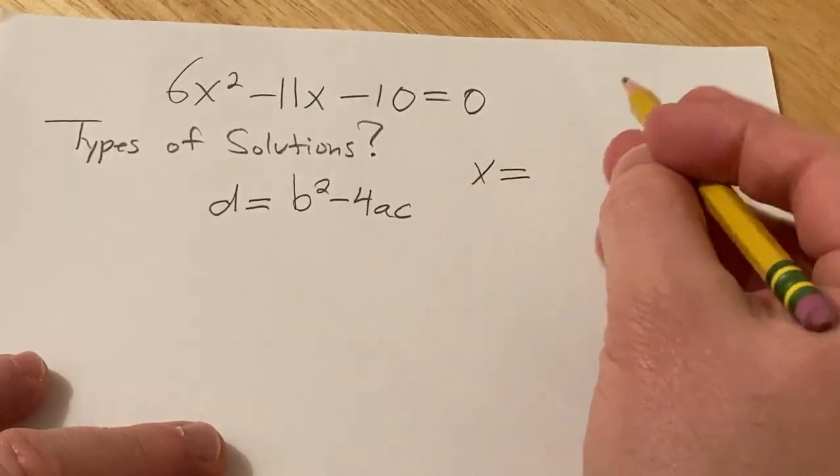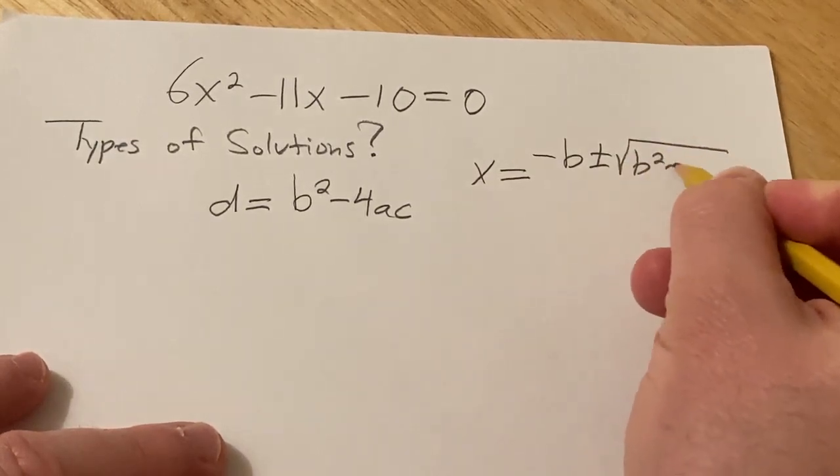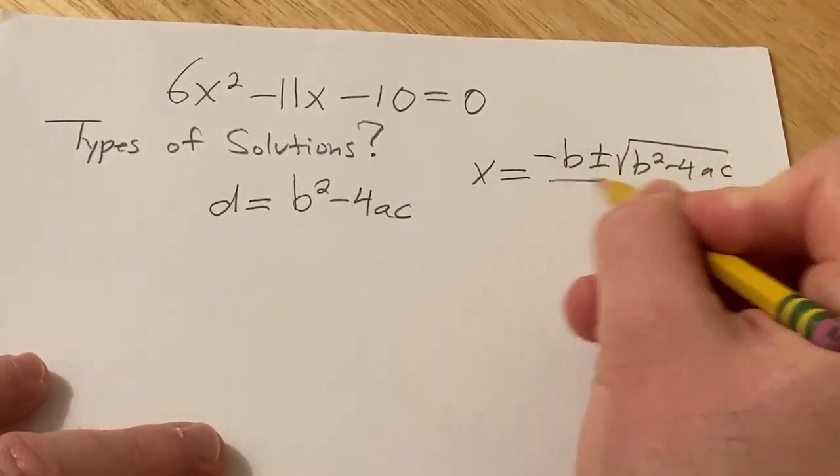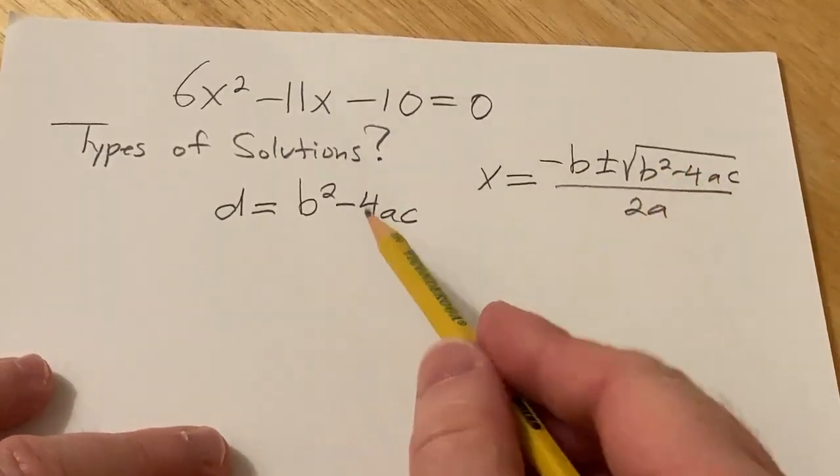Recall the quadratic formula is x equals minus b plus or minus the square root of b squared minus 4ac all over 2a. And this piece here on the inside is called the discriminant.